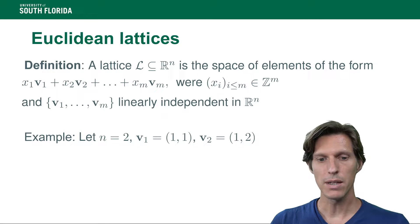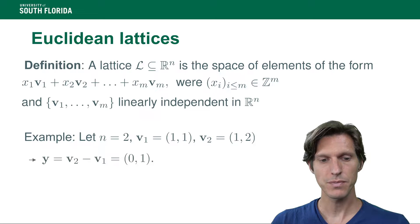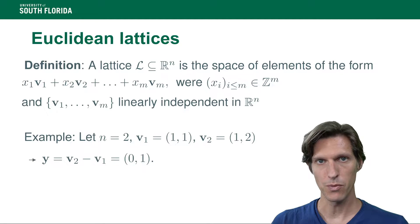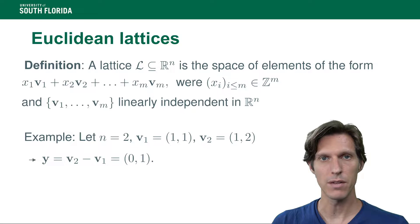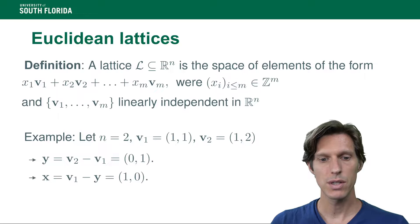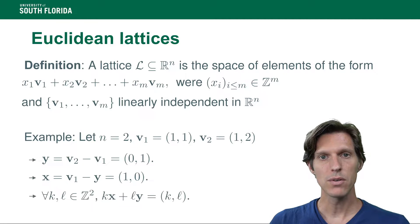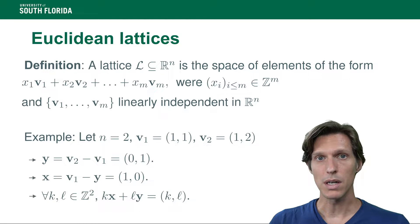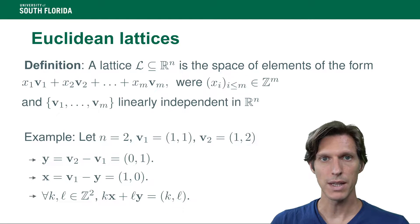So for example, for n equals 2, and v1 is (1,1) and v2 is (1,2), so these are two linearly independent vectors, we can have the lattice that is defined by v1 and v2 which contains the vector v2 minus v1, which is (0,1). It also contains v1 minus that newly created vector (0,1), which gives (1,0), and every linear combination of (0,1) and (1,0), which gives basically all vectors of Z squared. So we have the unit lattice here.